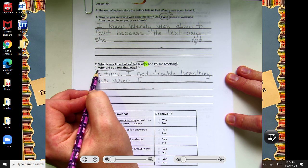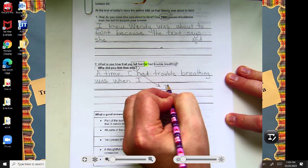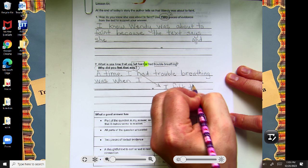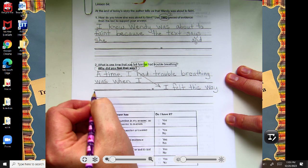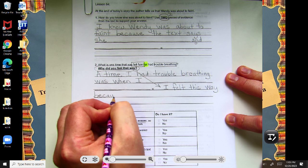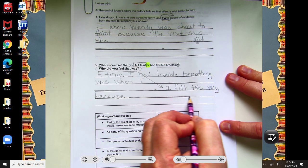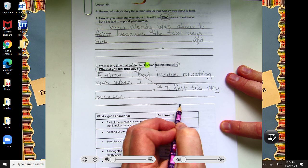And then there's a second part to this, so everyone make sure you get a second part. I felt this way because, and then why did you feel that way, right? Why did you feel faint, or why did you have trouble breathing?